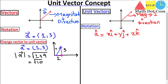We want to convert this vector into a unit vector. For that there is a formula: â equals the given vector a divided by the magnitude of the vector. If you apply this formula, you can easily get a vector having magnitude equal to one.